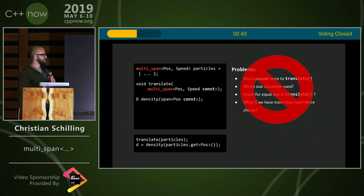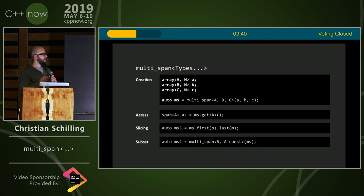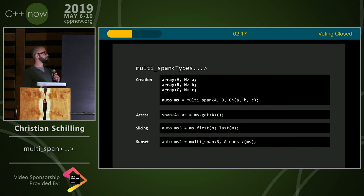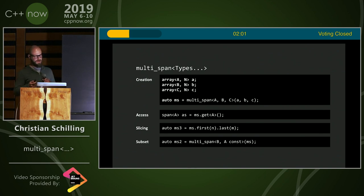This basically solves the problems. What can you do with it? First, you create it from multiple chunks of different type but same size. You can get the different individual spans back out of it, you can sub-slice all of them at once in parallel, and the most interesting operation is that it can convert to a multi-span with a subset of the original types. So if I add another component to my particle — like color or whatever — I could still pass it to my translate function and it will just drop the component I don't need.